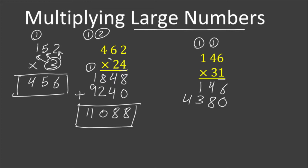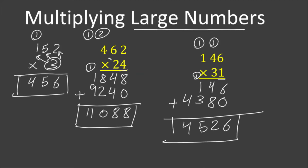3 times 1 is 3, plus 1 is 4 — write 4 here. Once we get the product of the two numbers, we add to get the final product. 6 plus 0 is 6. 8 plus 4 is 12 — write 2 and carry 1. 1 plus 3 is 4, plus 1 is 5. And 4 plus nothing is 4. The final product for these two numbers is four thousand five hundred twenty-six.